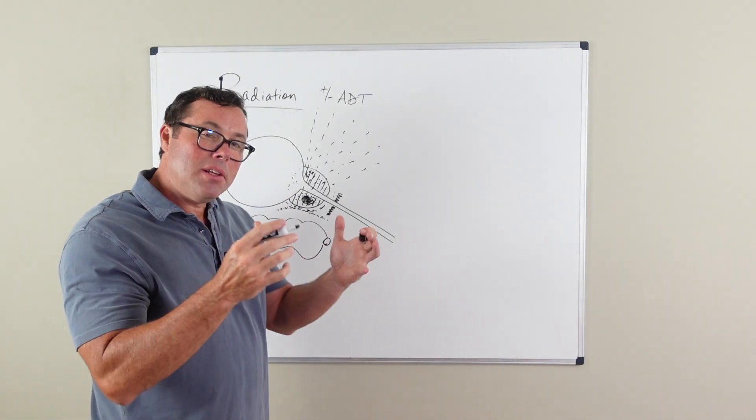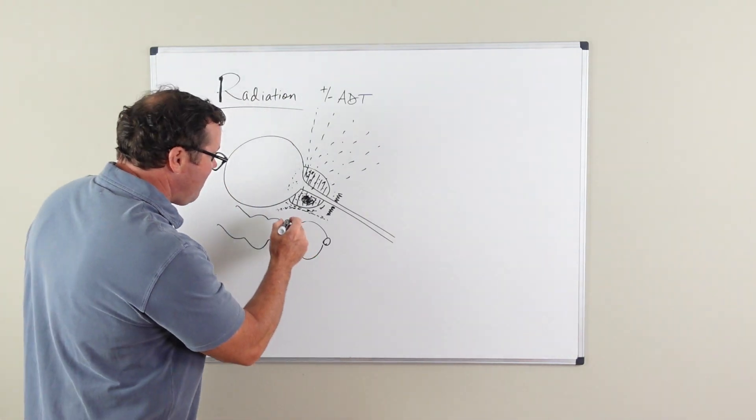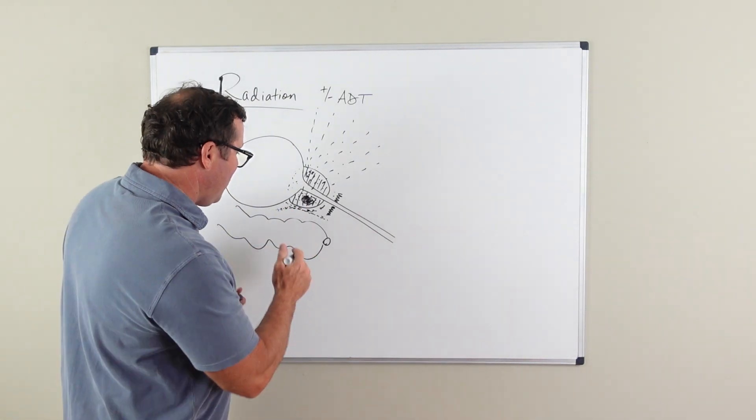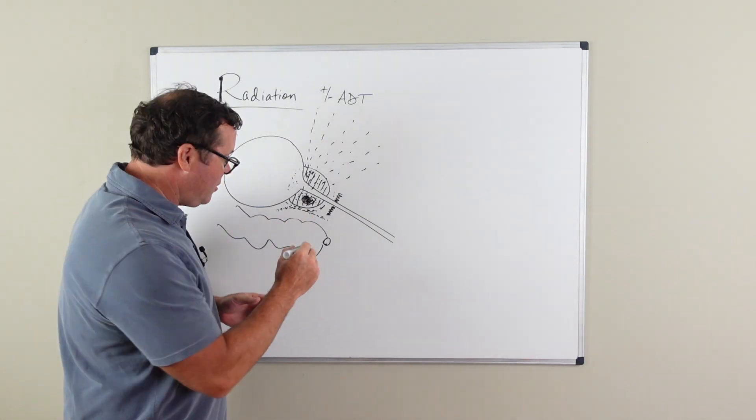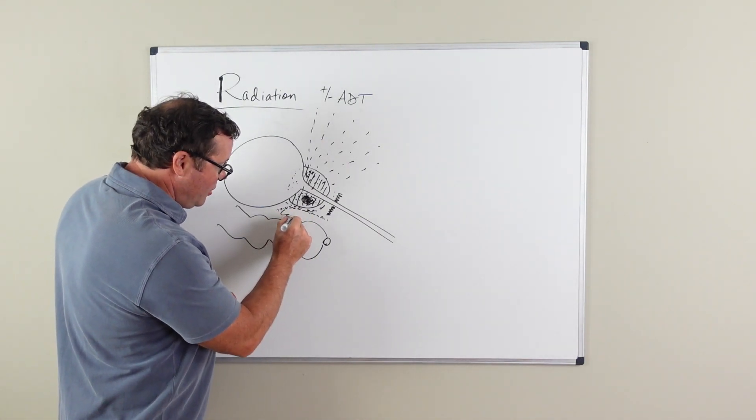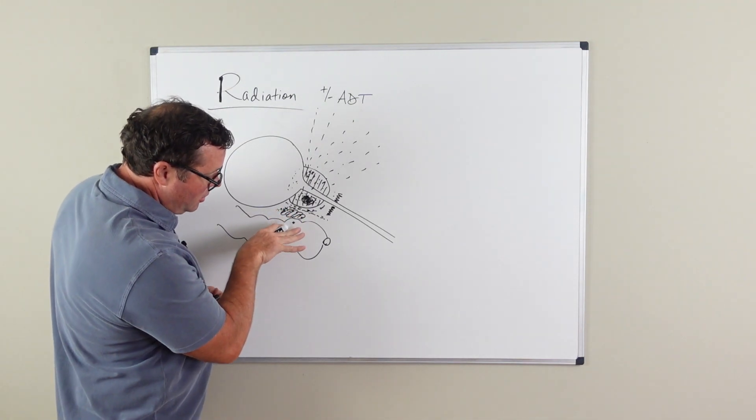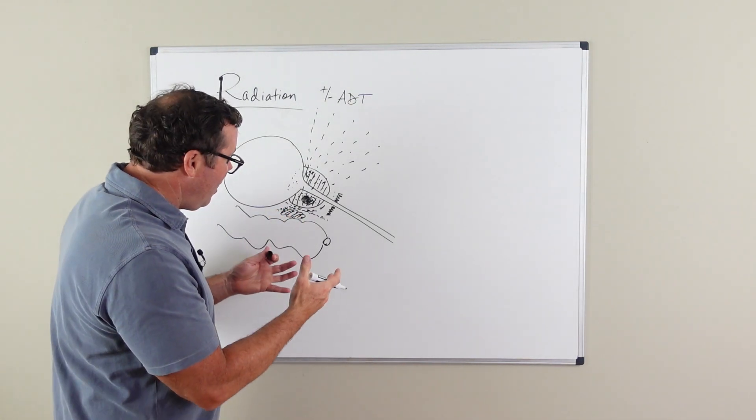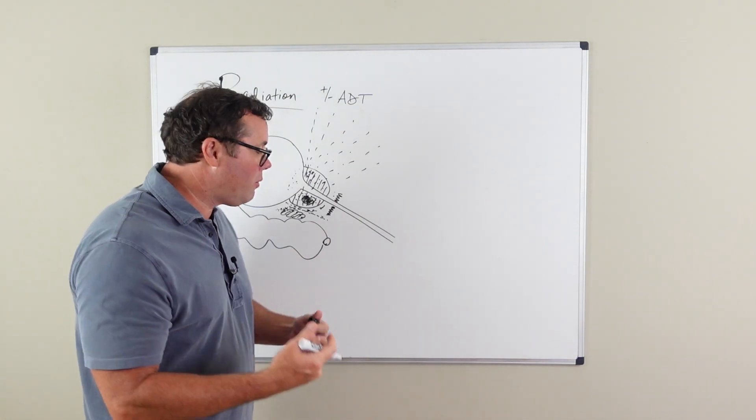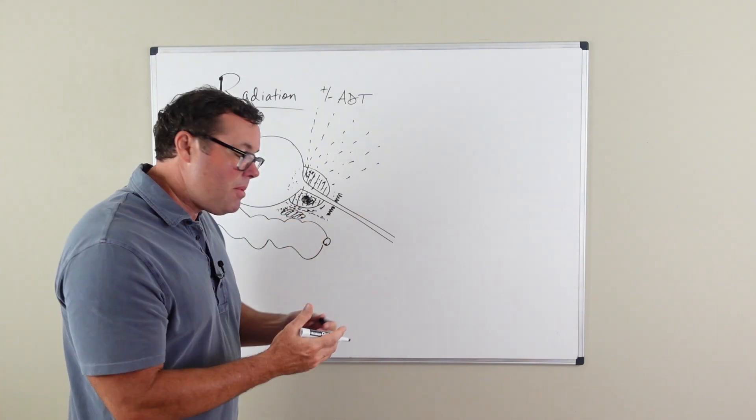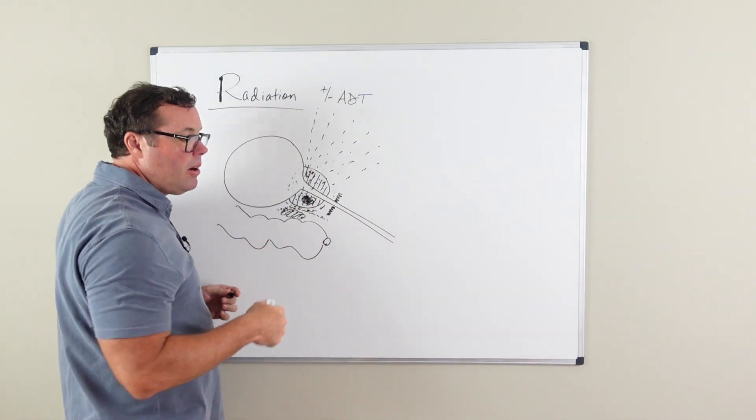Some of this is mitigated by what's called placement of a hydrogel spacer. In your urologist's office, a hydrogel spacer can be placed to push this rectum away, and what that does is decrease your risk of rectal complication with treatment with regards to radiation.